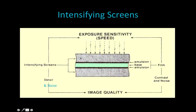The first layer we see here in gray is representing our intensifying screen. Then we have the black lines which are our emulsion and the base, and then we have another emulsion and then another intensifying screen. Some of the systems we use for radiology have an intensifying screen on both sides. Mammography, for reasons that relate to spatial resolution, we only have an intensifying screen on one side.